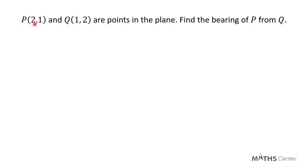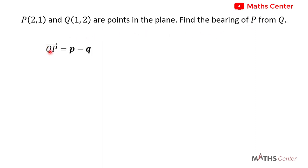Point P with coordinates (2, 1) and point K with coordinates (1, 2) are points in the plane. Find the bearing of P from K. From vectors, we know that the bearing of P from K will be given by the direction of the vector KP. We first have to find the vector KP and then find the direction of this vector KP.